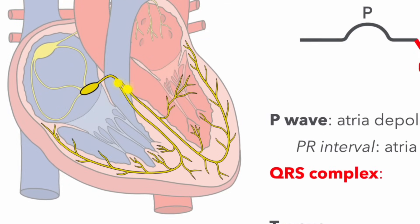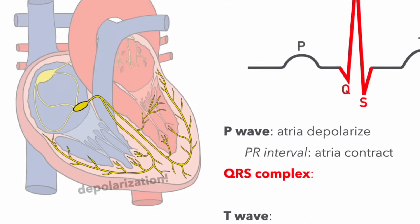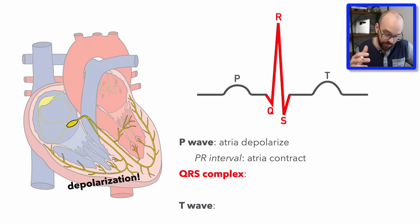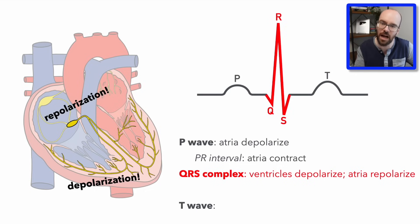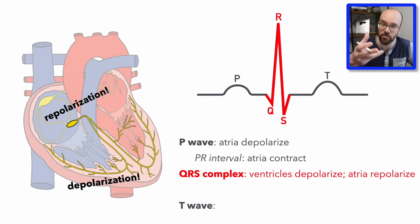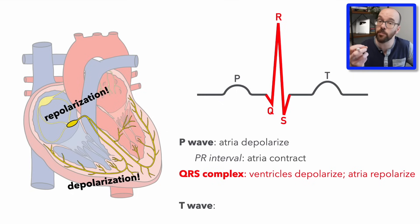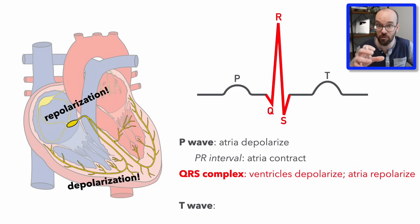During the QRS complex, the signal passes through the left and right bundle branches and Purkinje fibers to depolarize the ventricles. The atria are also repolarizing — repolarization is the opposite of depolarization: it's when tissue returns to its resting membrane potential and the muscle relaxes and stops contracting.